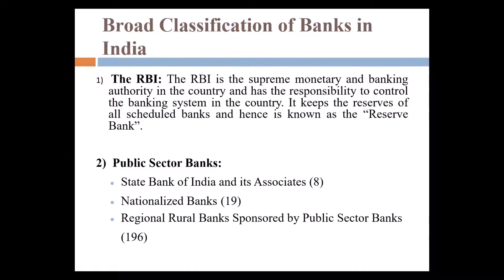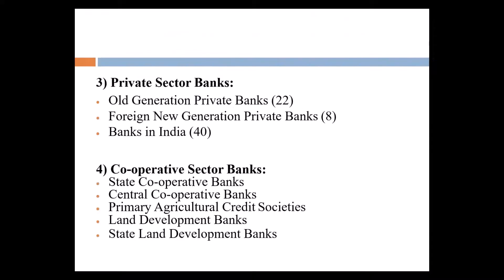You can go through this presentation again for the broad classification of banks. Public sector banks include State Bank of India, nationalized banks — now 13, not 19, as some have been merged — and regional rural banks, which are about 200 to 225 in number, sponsored by public sector banks. There are also old-generation and new-generation private banks, with 14 to 40 private sector banks in total.